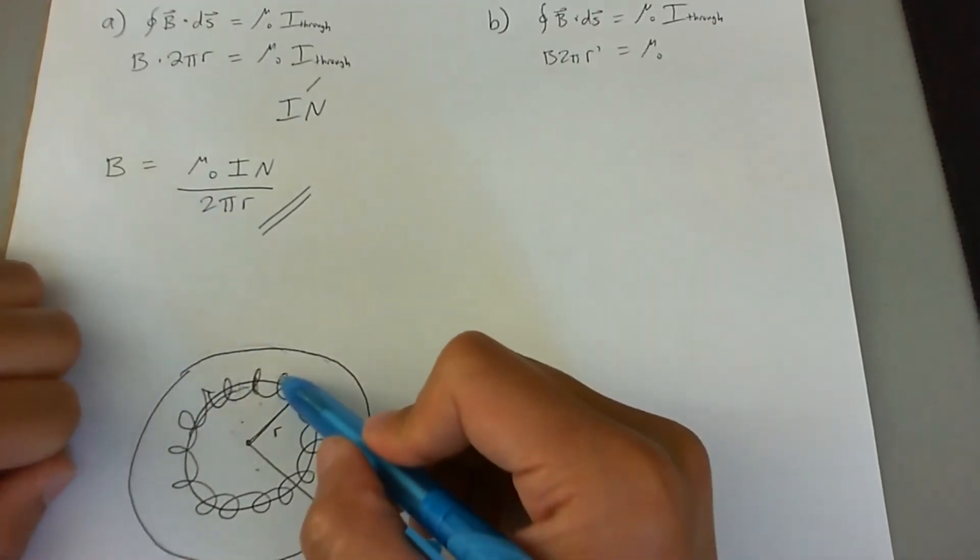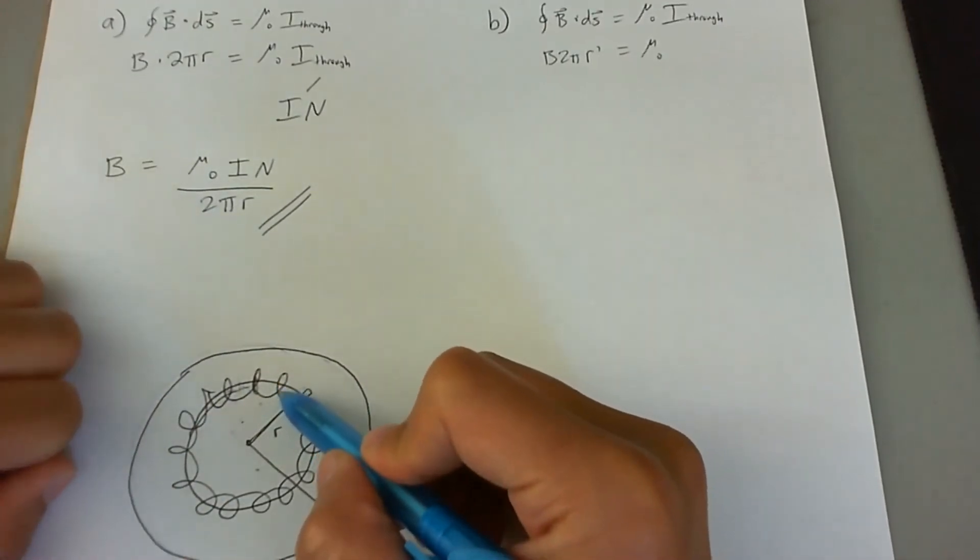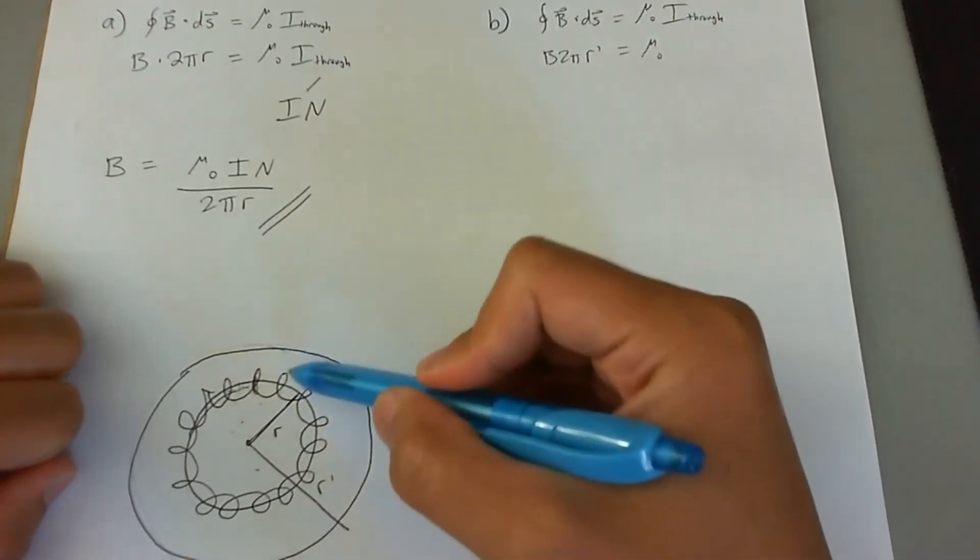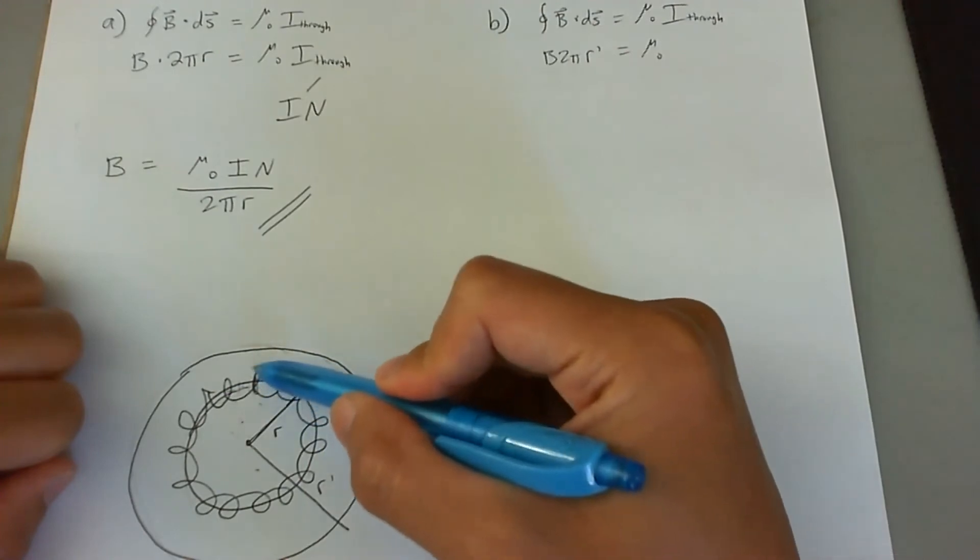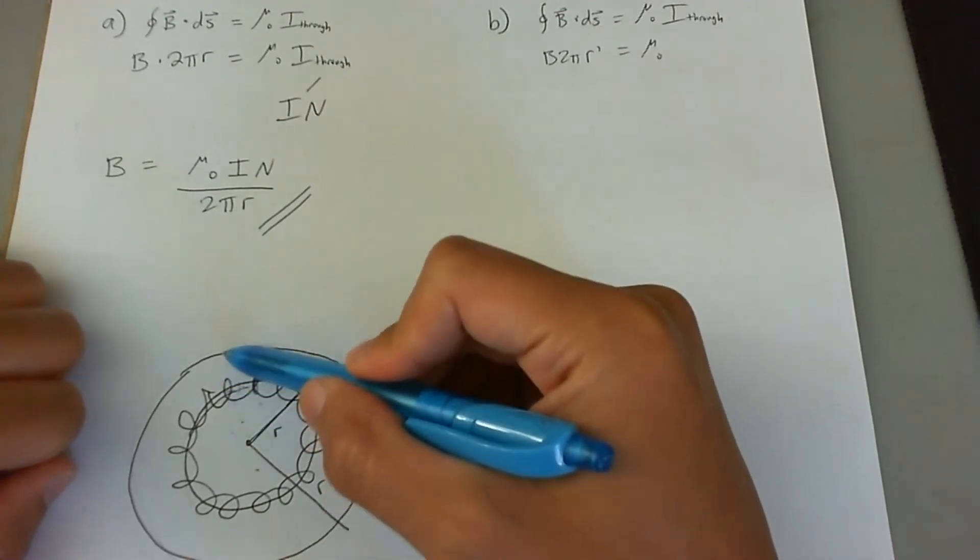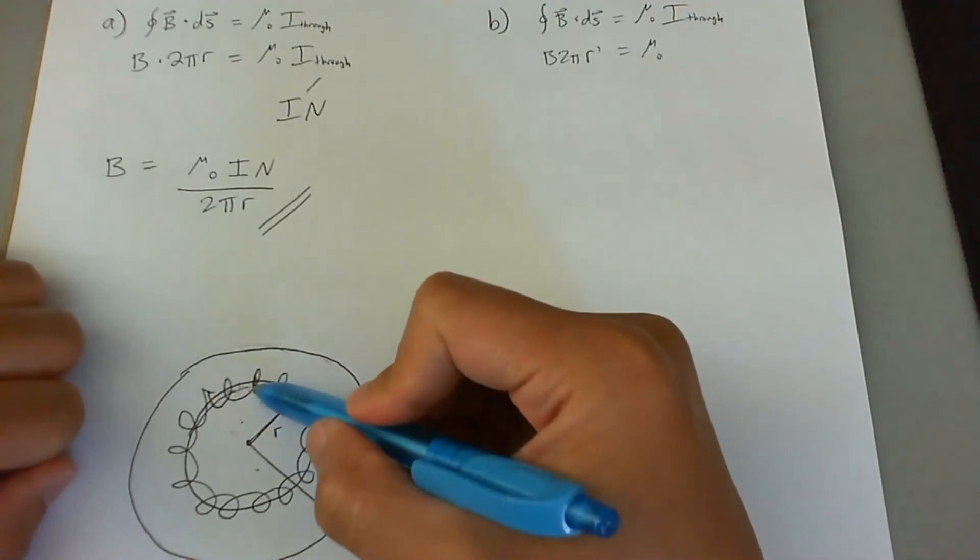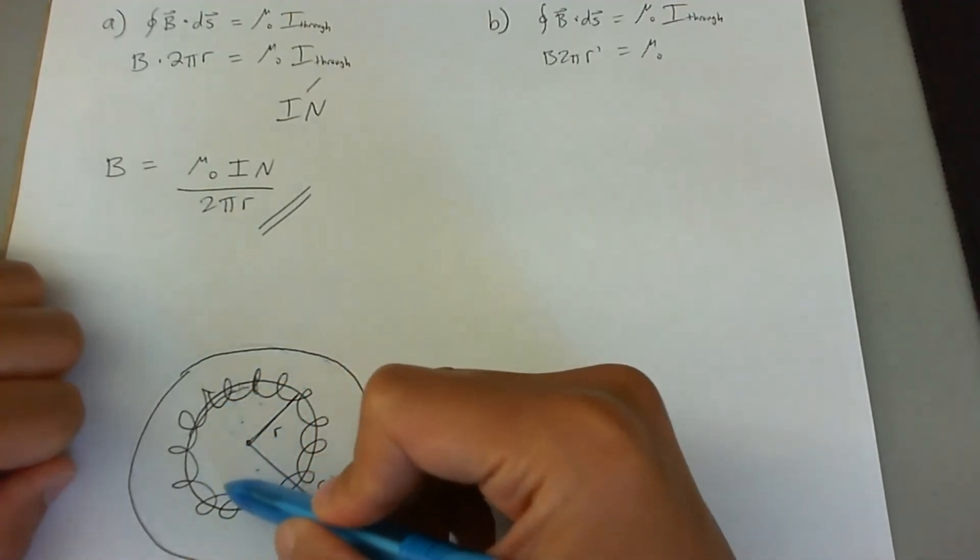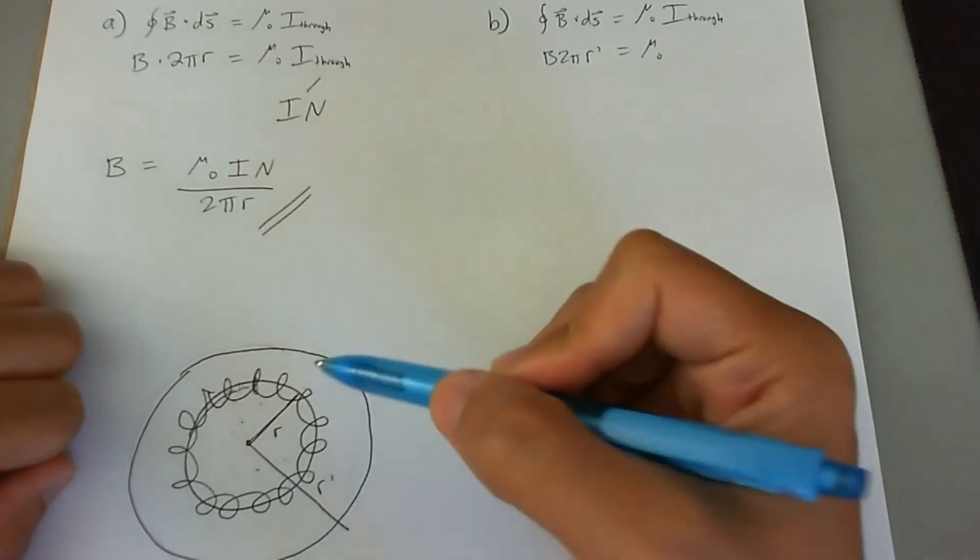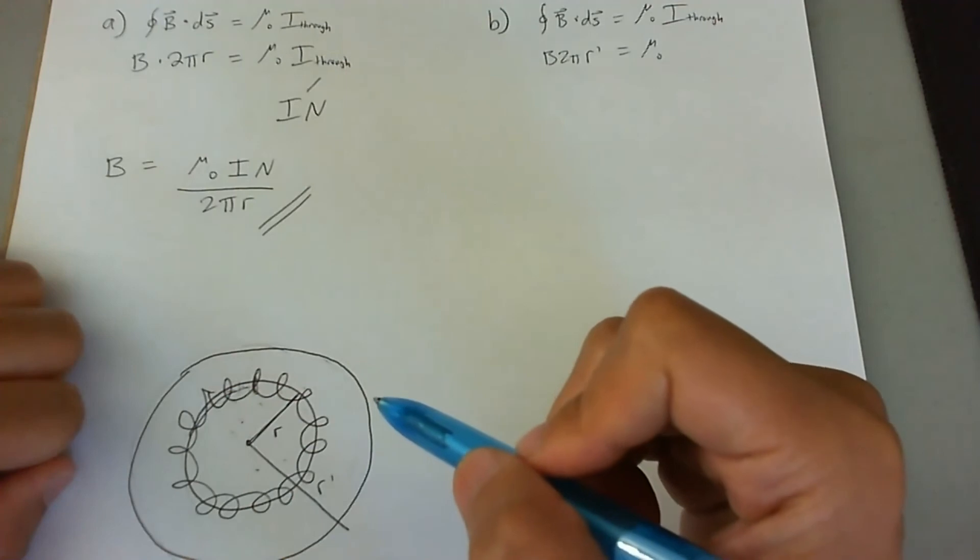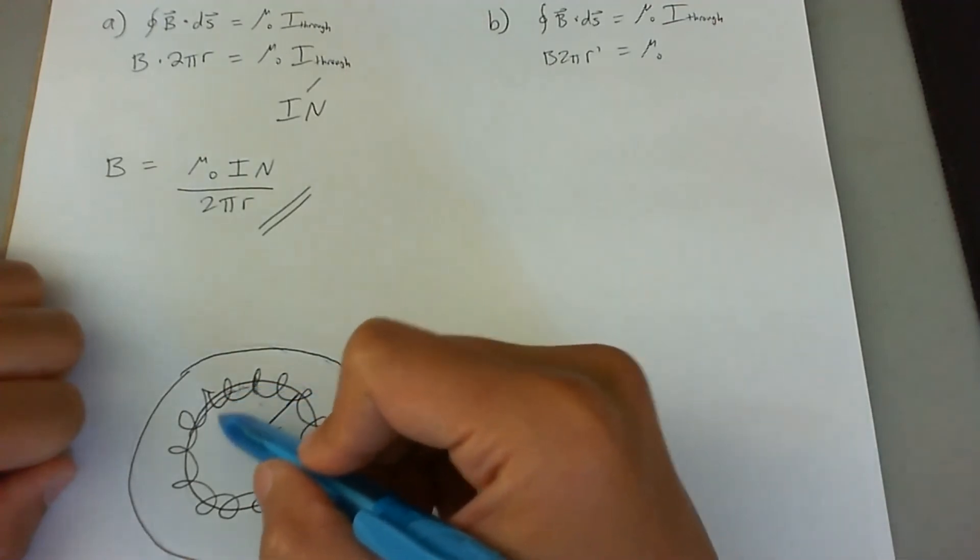Now, the thing is you have current going down on this side of the smaller amperian loop and going upwards out of the paper on the outer side. Both of this down and up pattern of this solenoid are both inside the larger amperian loop. So even though net current goes down inside the smaller loop and then up outside that smaller loop...